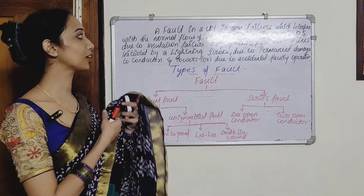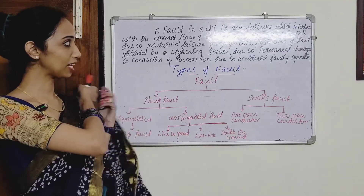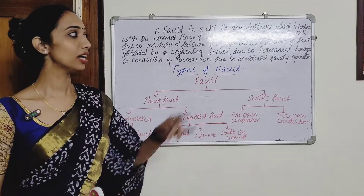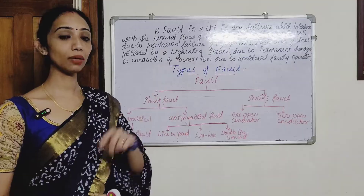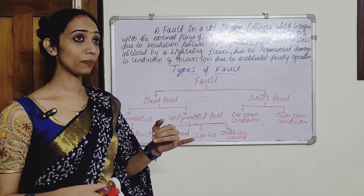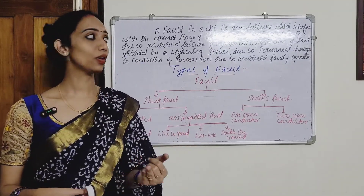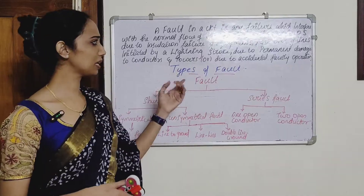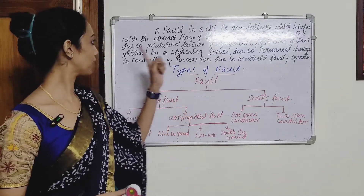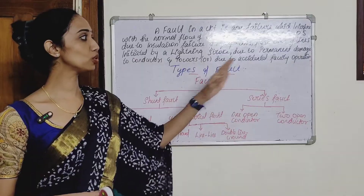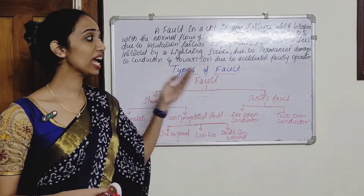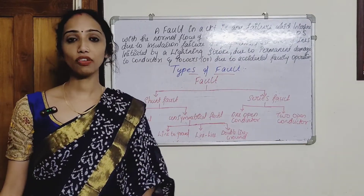The fault in a circuit is any failure which interferes with the normal flow of current. The fault occurs in a power system due to insulation failure, conductor damage, lightning over the line initiated by a lightning stroke, due to permanent damage to conductors, or due to accidental faulty operation.